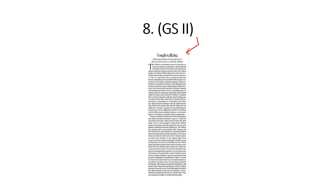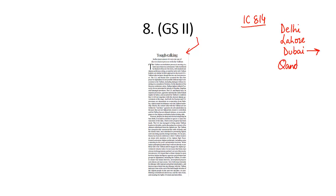Afghanistan is a very important country in our neighborhood. To give one example: IC 814, an Indian Airlines aircraft, was hijacked by terrorists. The hijacked plane made its landing in Delhi, then Lahore for refueling, then Dubai where some passengers were released, and then Kandahar — which was then under the government of Afghanistan, which was the Taliban government.